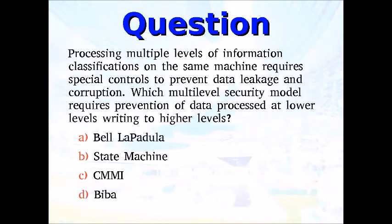Spock could figure out the state machine model. He could say, well, it's not the state machine model, Captain. State machine refers to tracking how things change state — we have the beginning state, the middle state, the end state. When a machine boots up, it should boot securely, run securely, and even in a failure, it should fail securely. And let's imagine that Spock knows what CMMI is. CMMI is a maturity model for process maturity — to see how good you are at something.